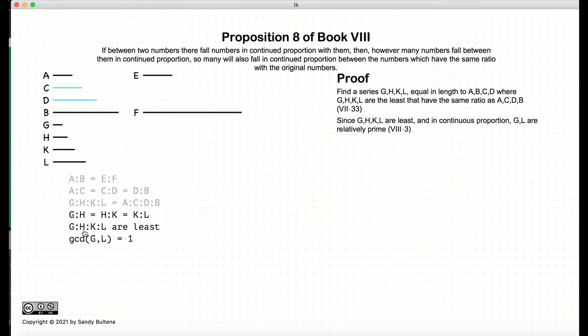Now, since g, h, k, and l are the least numbers in a proportional series, according to Proposition 3 of Book 8, g and l are relatively prime.